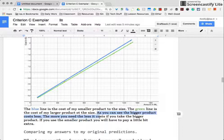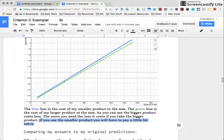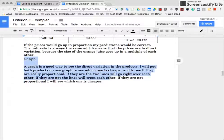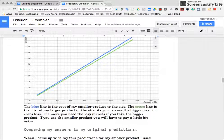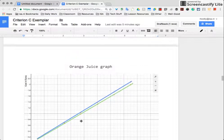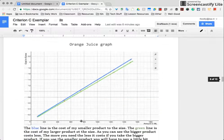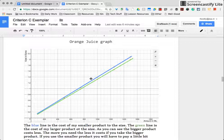As you can see, the bigger product costs less. The more you need, the less it costs if you take the bigger product. If you use a smaller product, you'll have to pay a little bit extra. So if you can tell, he's gone from talking about a graph, what a graph is, showing the graph, and then interpreting the graph. So this is an excellent example of moving between different forms.